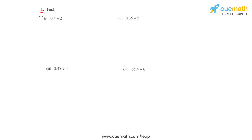Question number one says to find the value of the division given in each of the bits of this question. We'll be starting with the first bit where we have 0.4 which is to be divided by 2.